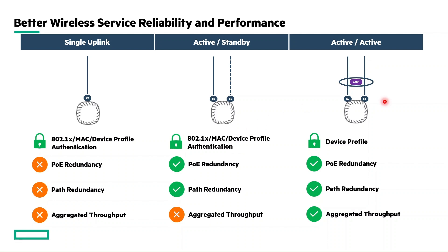The third approach is active-active mode, where both interfaces remain active. This is configurable only using LACP enablement in the AP. Secure onboarding of dual port APs with LACP enablement is done using device profile — a 10.13 feature. With this, you can achieve PoE redundancy, path redundancy, and aggregated throughput since it is a LAG interface.